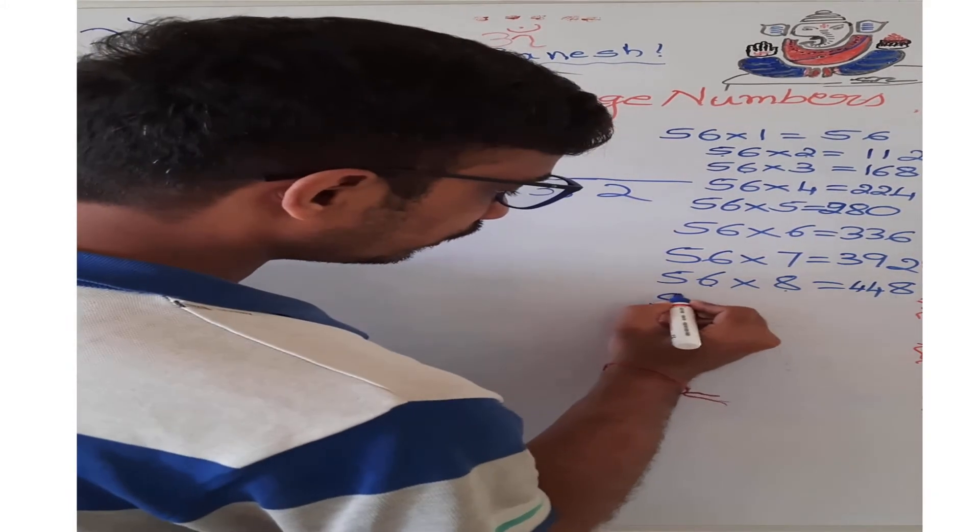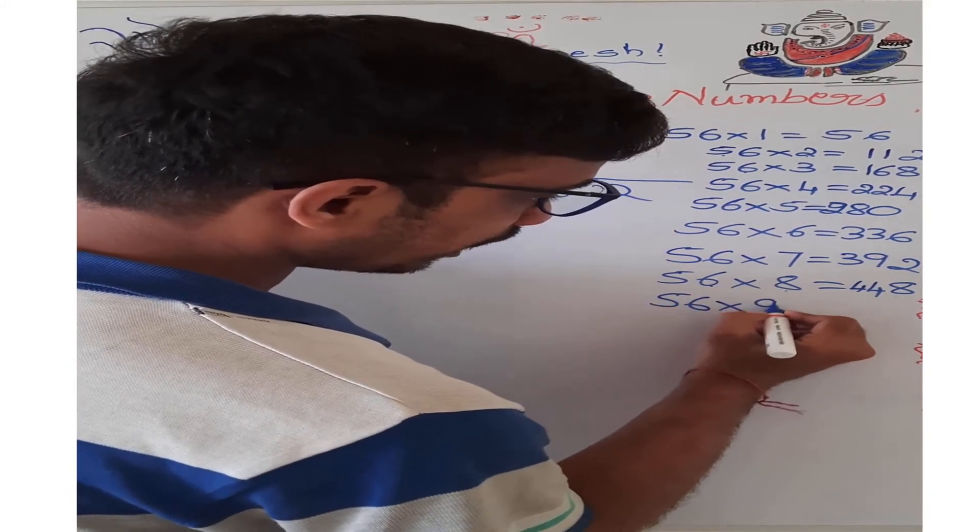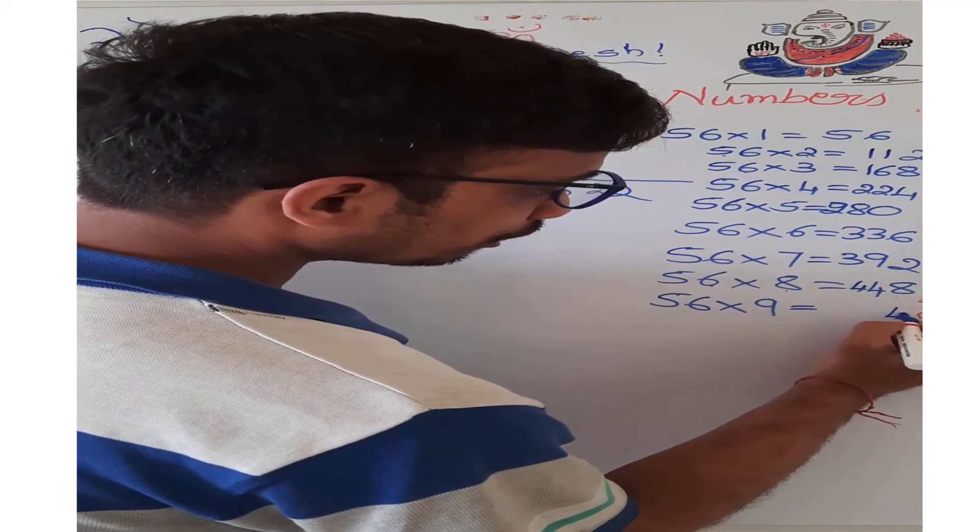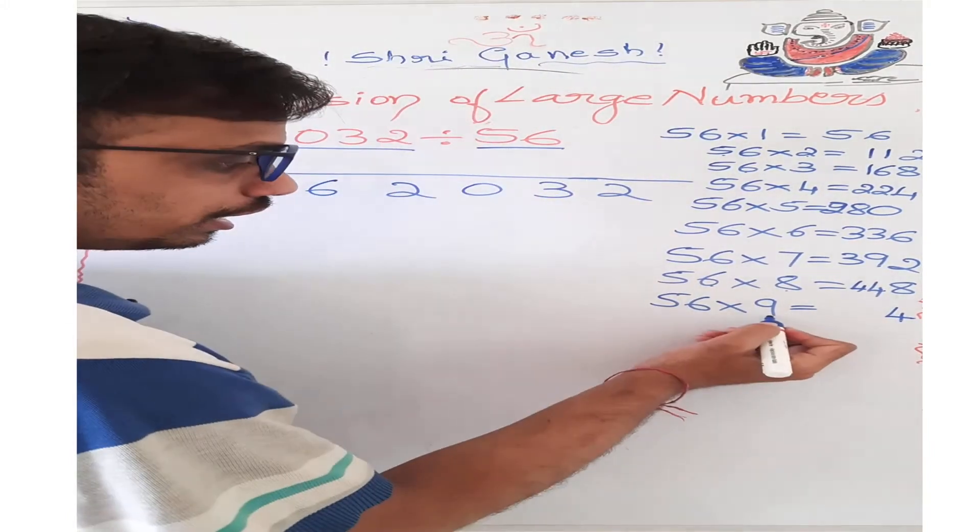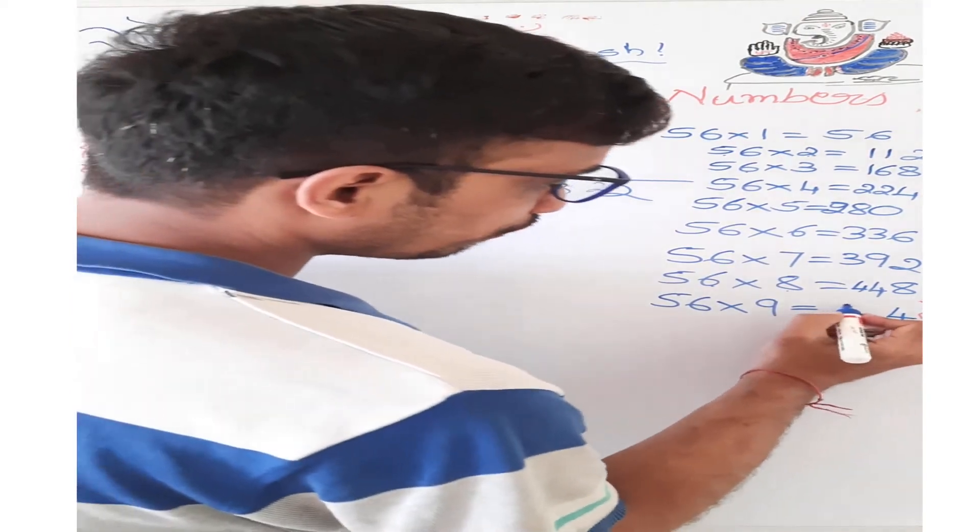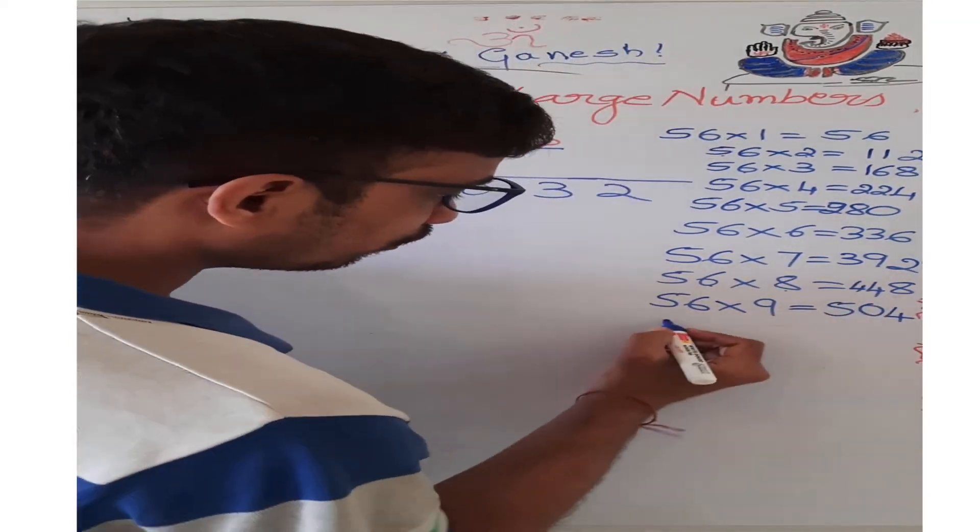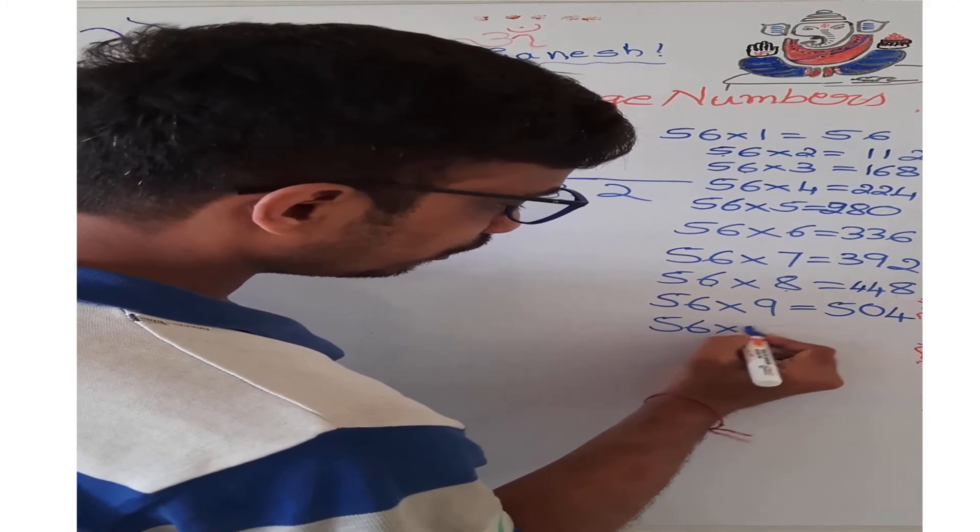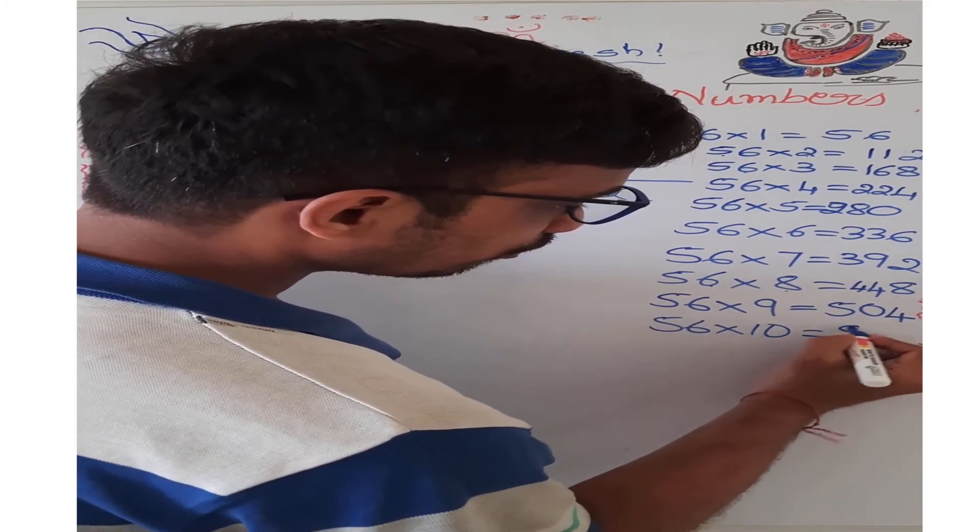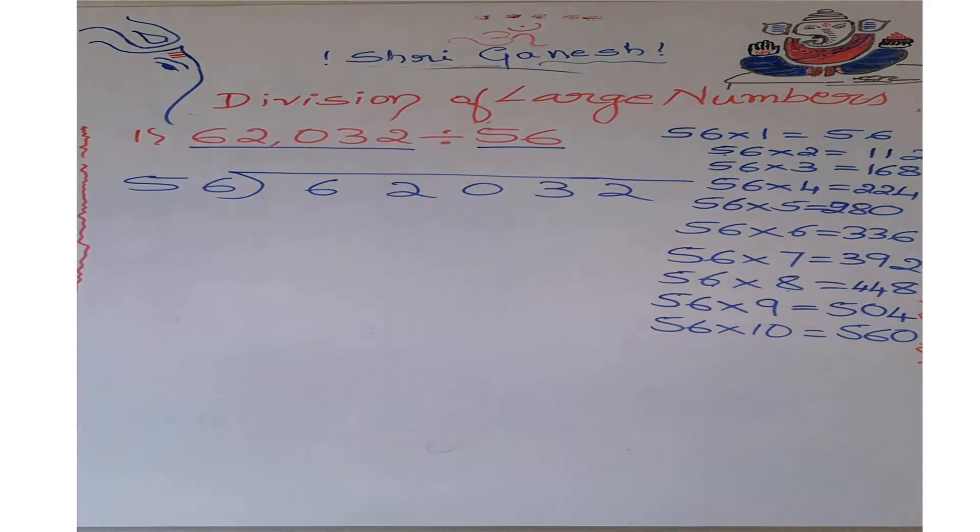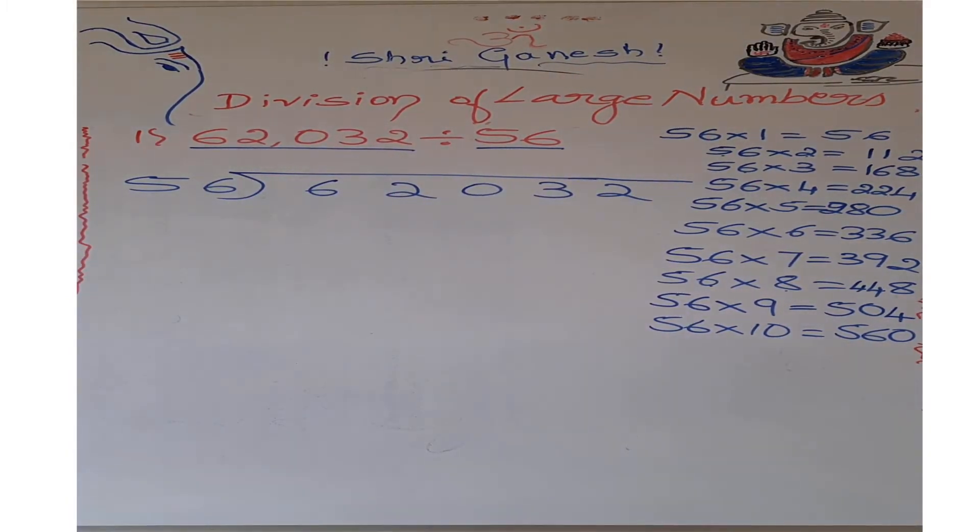56 into 9: 9 into 6 is 54, 4, 5 carry. 9 into 5 is 45, 45 plus 5 is 50. We got 504. 56 into 10, we get it as 560. These are the tables of 56 we got.